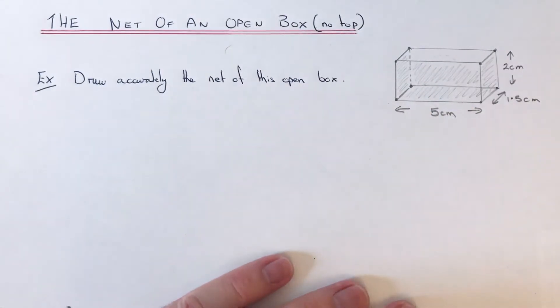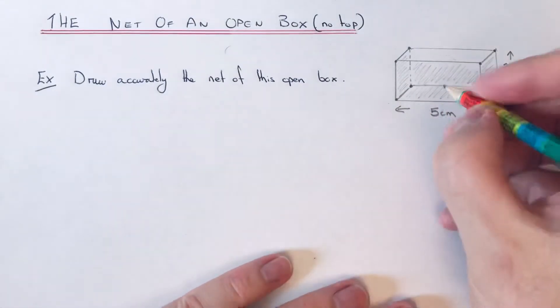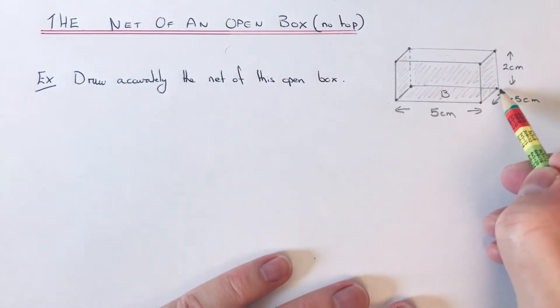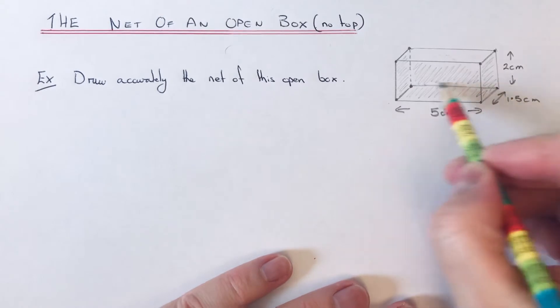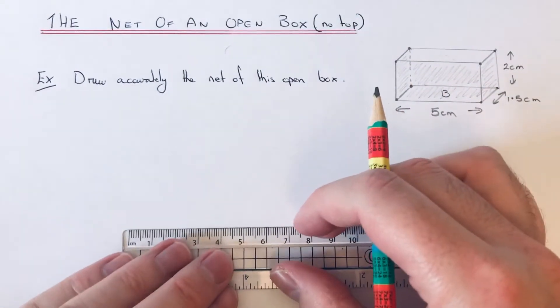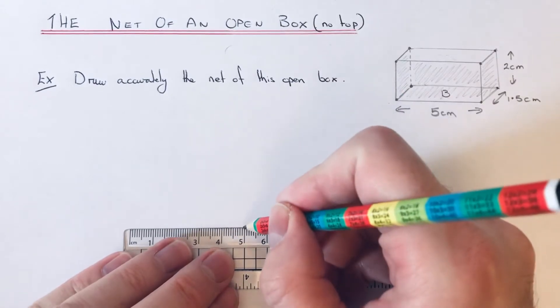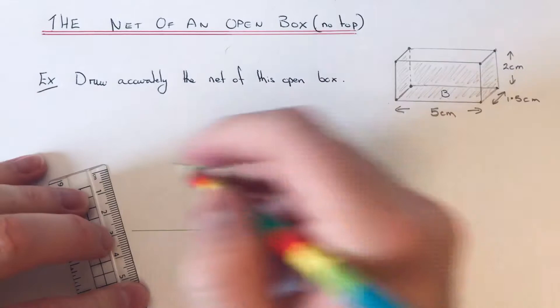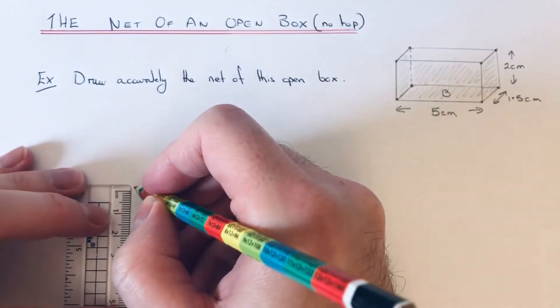The best way to do it is to start off with the bottom face first. The bottom face is a 5 by 1.5 rectangle, so if I go 5 centimeters across and we want to get 1.5 centimeters up.